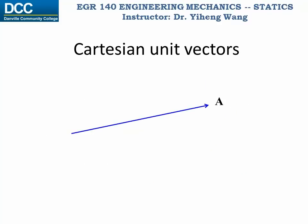Since a vector needs to be described by two parts — its magnitude and its direction — we can separate these two parts by defining unit vectors. For any arbitrary vector a, its unit vector u_a has the same direction but a magnitude of unit length one. Therefore, vector a can be expressed by its magnitude a, which is a scalar, multiplied by its unit vector u_a.